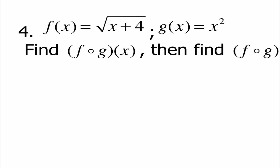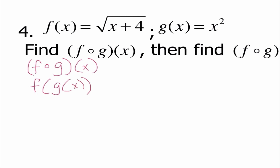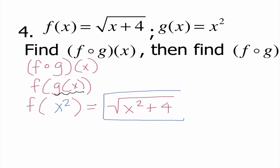Number four: f of x equals the square root of x plus 4 and g of x is x squared. We start with finding f of g of x. We know g of x is x squared, so in function f, wherever there was an x, I replace it with x squared. I get the square root of x squared plus 4. Since this is a binomial under the radical, I can't simplify it further. So the square root of x squared plus 4 is our final answer.